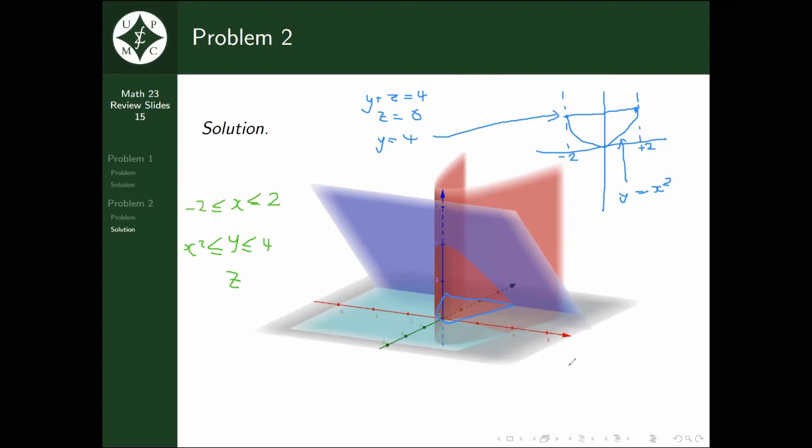Finally, for z, we now move back to this figure. In terms of z, our top boundary is this dark blue plane, while the lower boundary is this light blue plane. In other words, our lower boundary is z = 0, this light blue plane. And our upper boundary is y + z = 4.